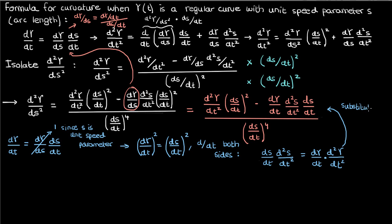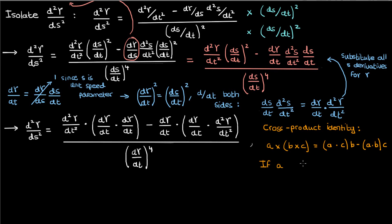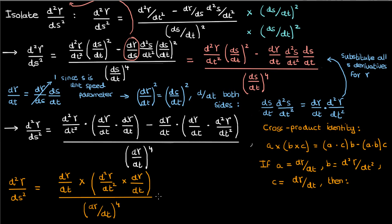Conveniently enough, we can substitute all of this into the equation for d² gamma by ds² up above. When we do that, here's what we'll get. There's a special cross product identity for the cross product of three vectors that looks something like this, where a cross b cross c can be written in terms of dot products like this. If we let a be d gamma by dt, b be the second derivative of gamma with respect to t and c be d gamma by dt, our equation becomes the following in terms of the cross products.